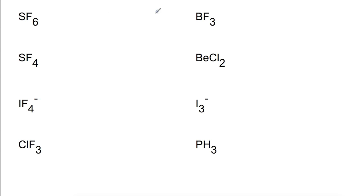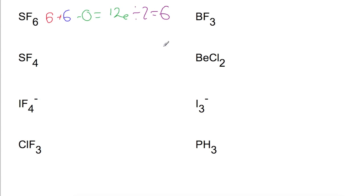For the first example, sulfur hexafluoride: sulfur has six electrons in its outer shell. We add six atoms and there's no charge, giving a total of 12 electrons around the central atom. Dividing by two gives six electron pairs, and with six atoms attached there are no lone pairs. So this must be an octahedral molecule.